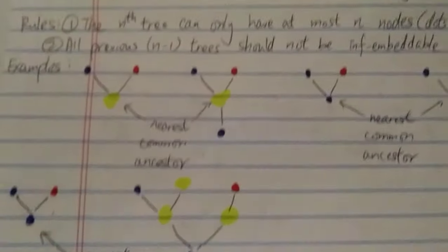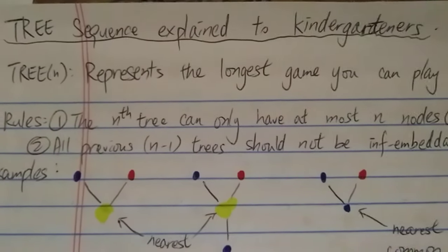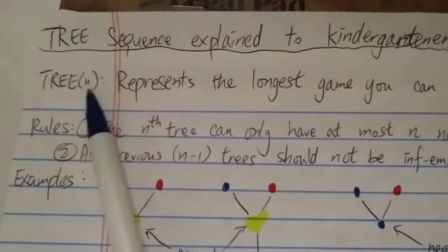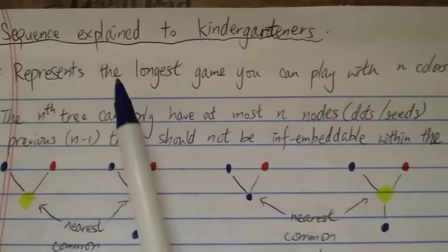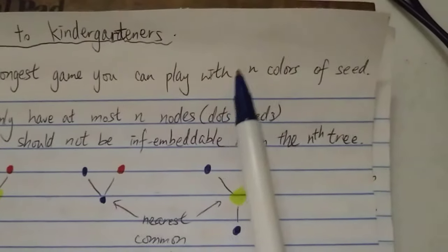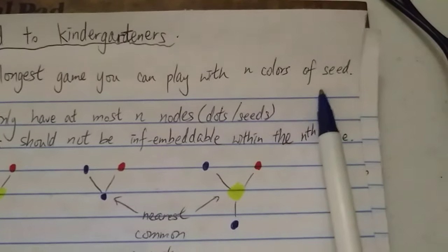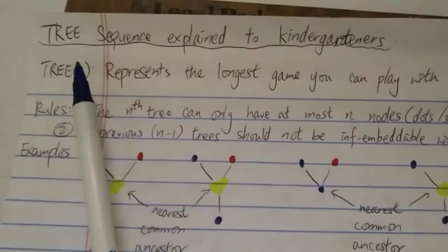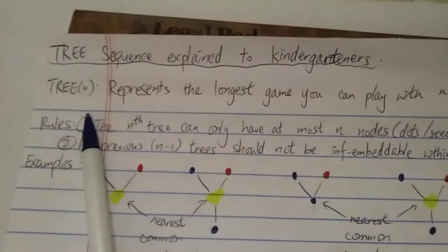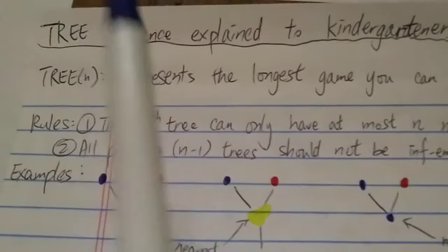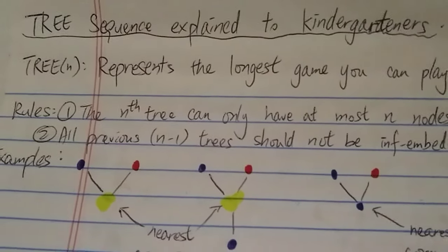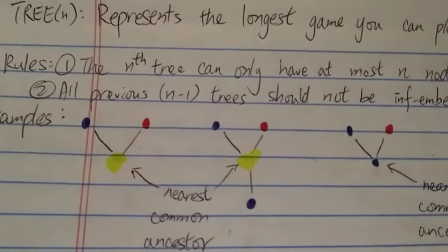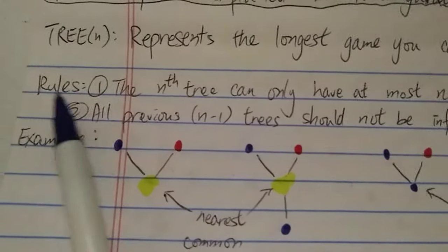So let's get started. What is the TREE sequence? TREE(n), written this way, represents the longest game you can play with n number of colors. So for TREE(1) you can use one color, TREE(2) you can use two colors, TREE(3) three colors, TREE(4) four colors, and so on. There are two simple rules.